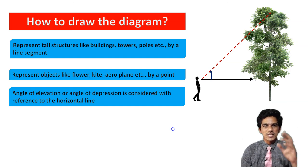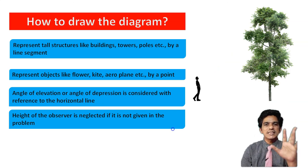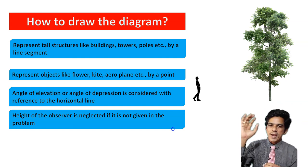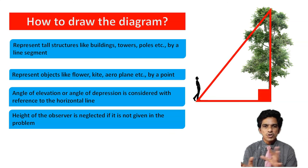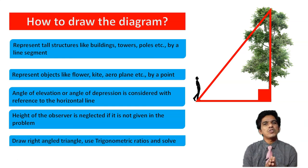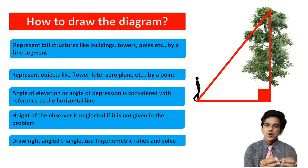Objects like an aeroplane or a ball or coconut can be represented using a point. Unless the height of the observer is given in the problem, the observer is also considered as a point. You have to imagine a horizontal at eye level, and with reference to this horizontal, you calculate the angle of elevation or depression. Then you draw a right-angle triangle involving all this information and use trigonometric ratios to solve the problem.